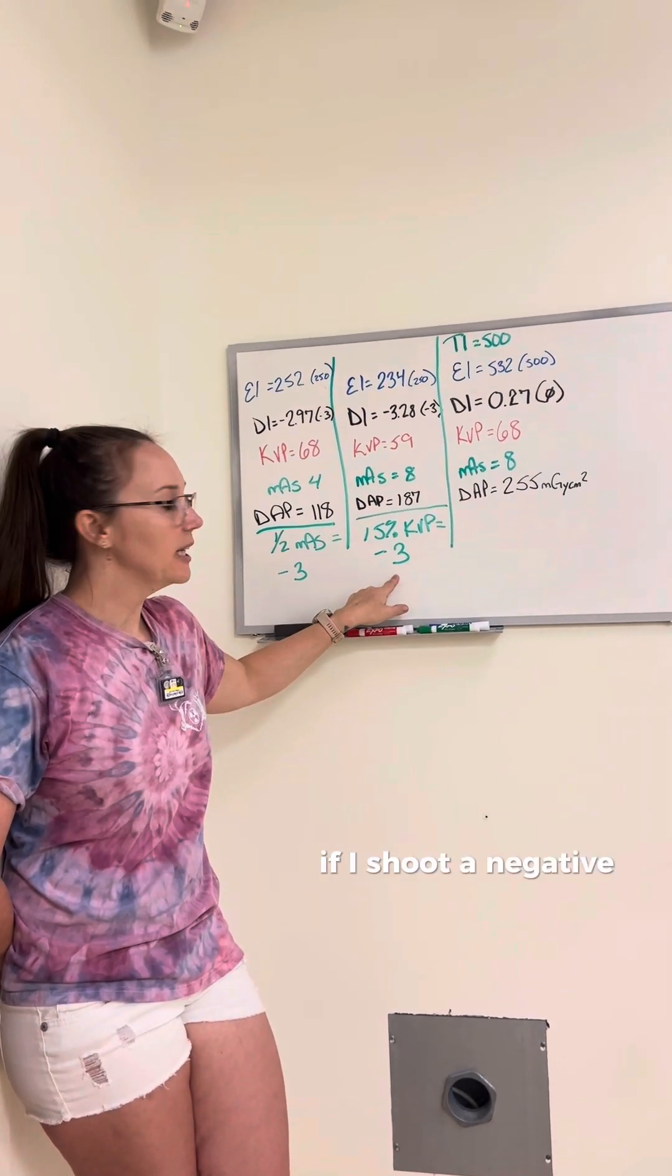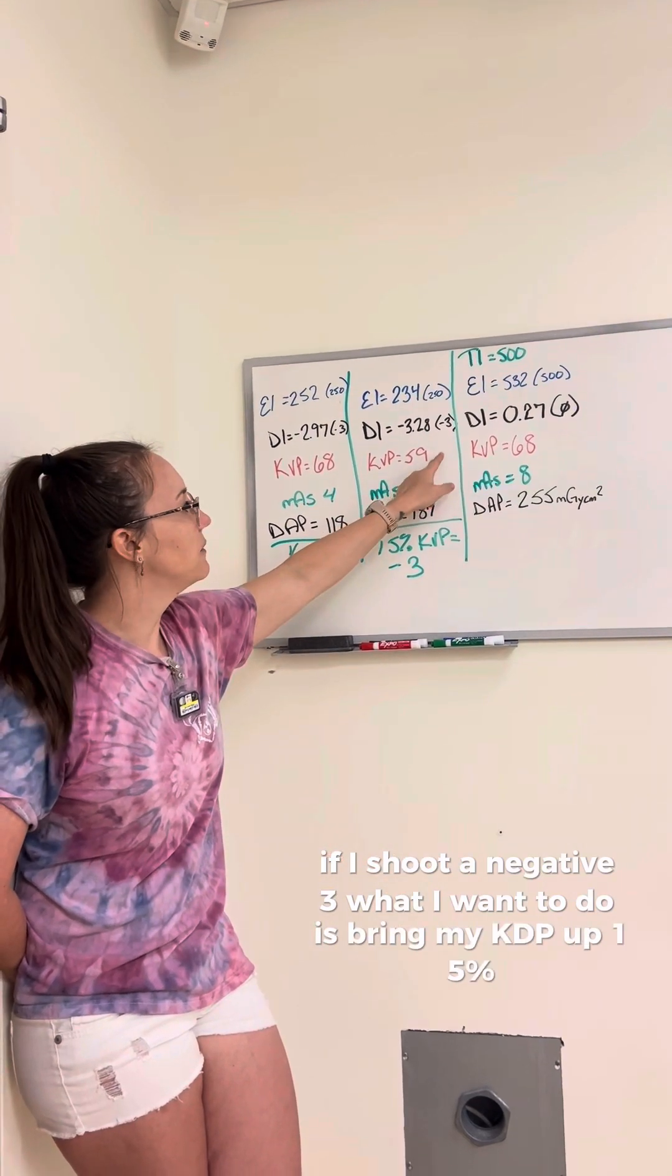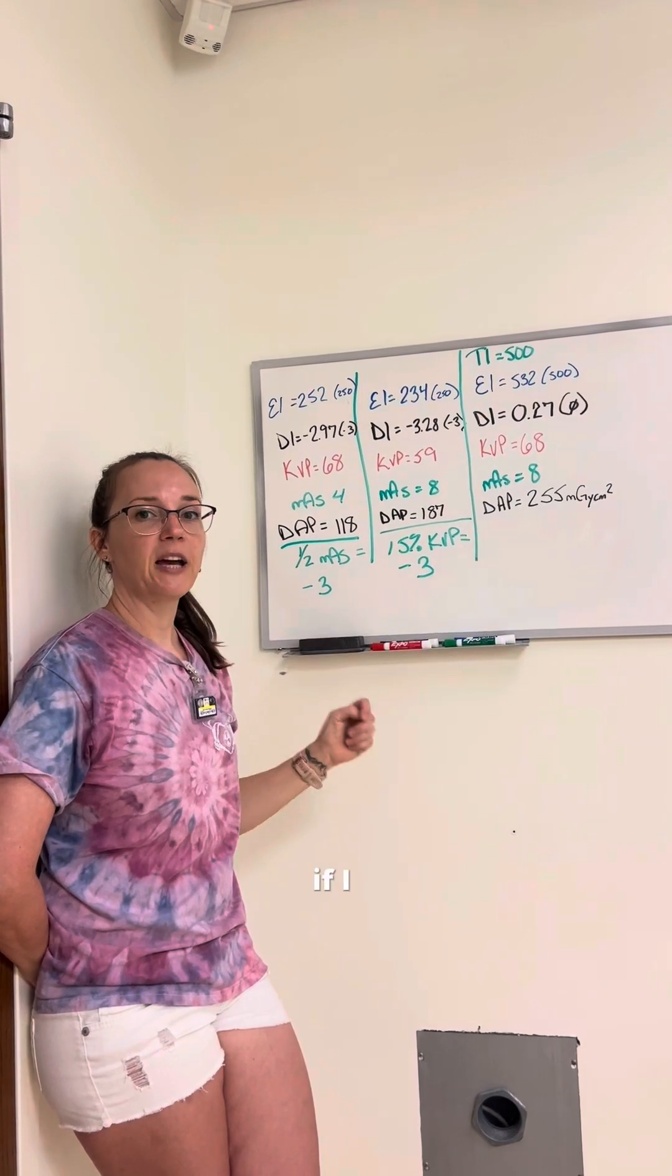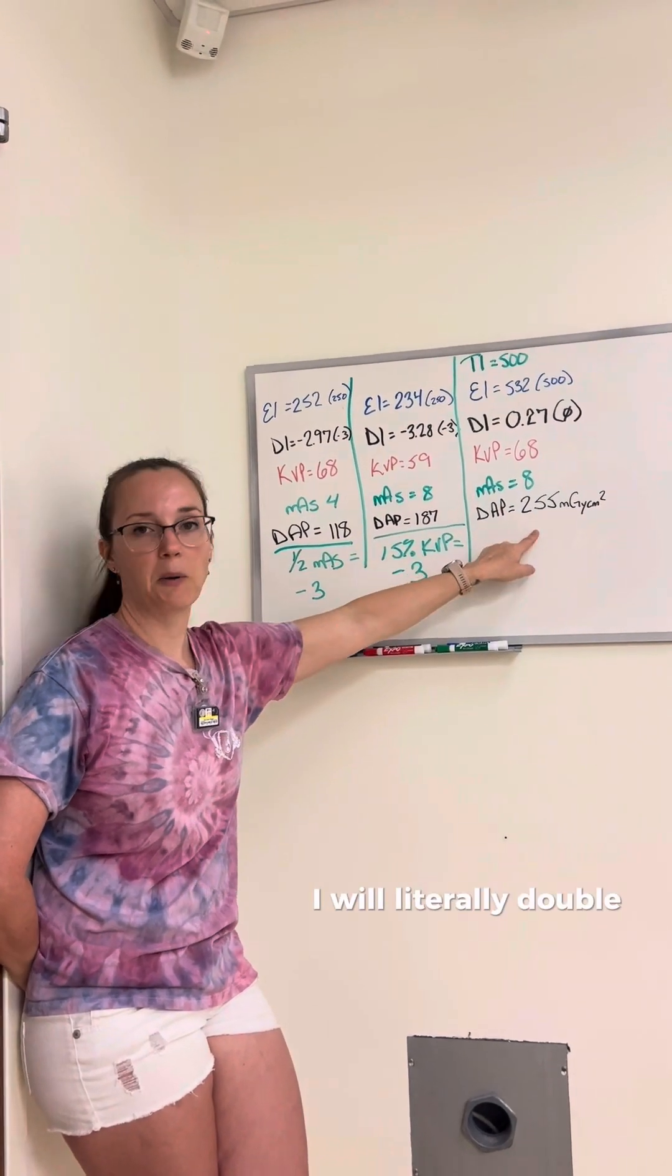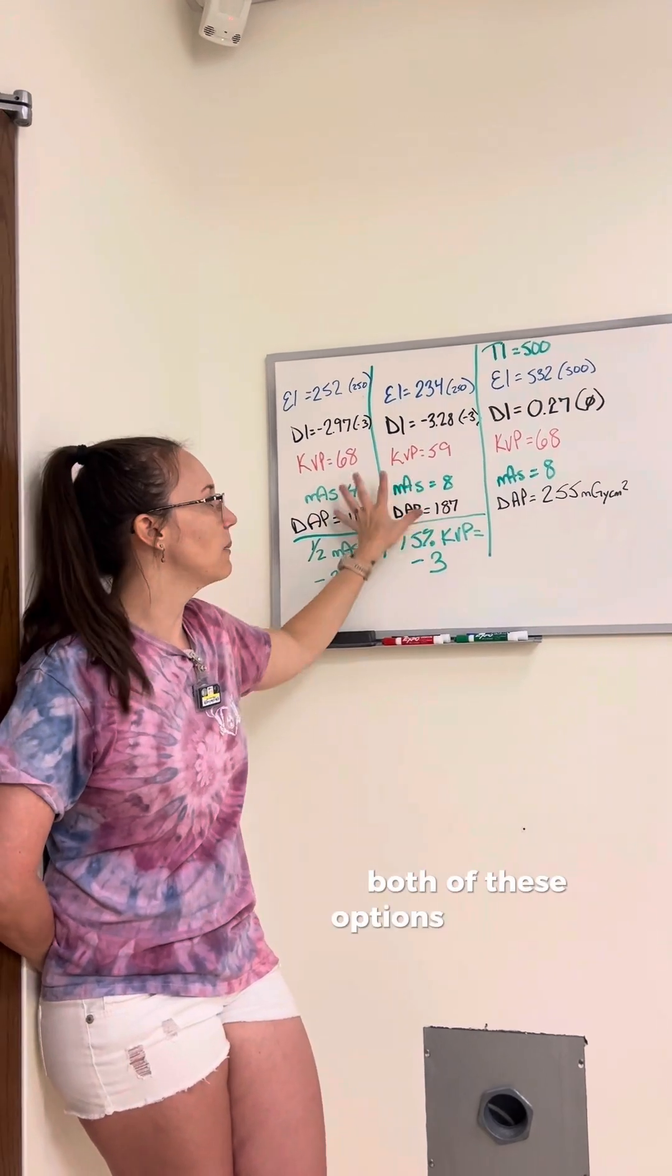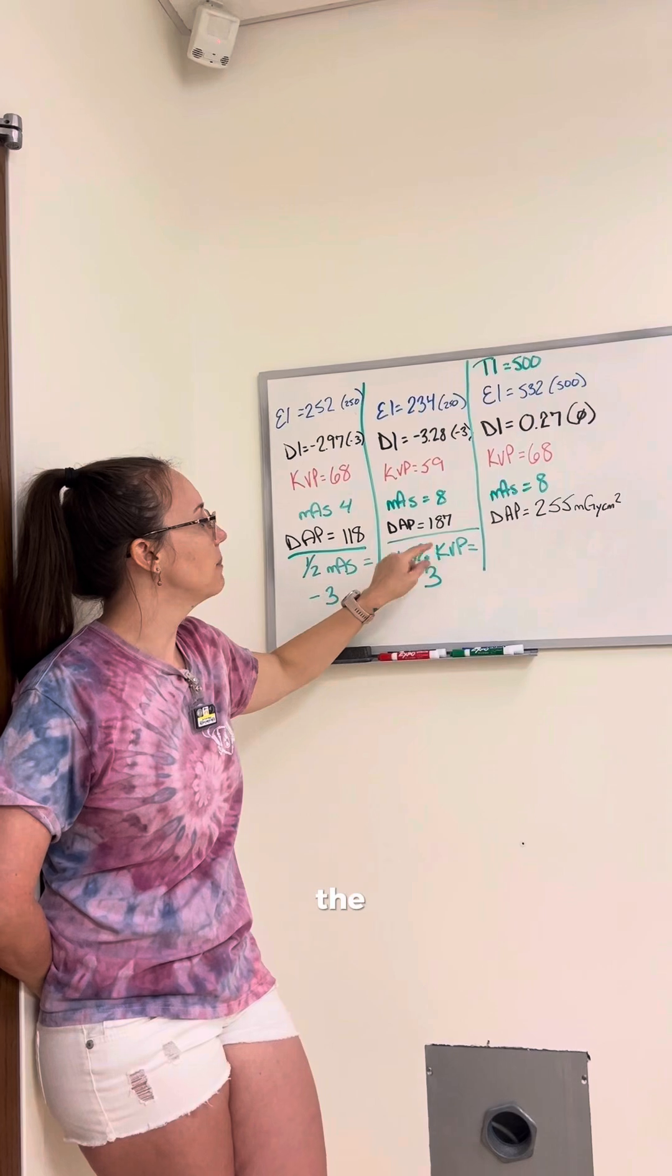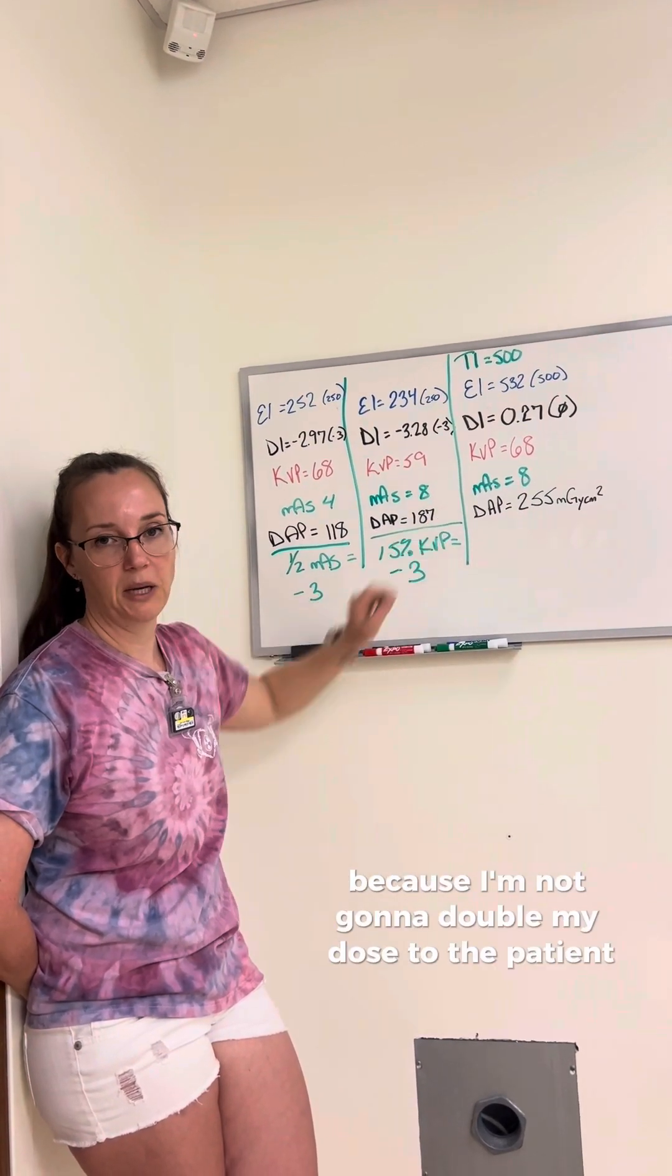If I shoot a negative 3, what I want to do is bring my KVP up 15% because do you see how it didn't double my dose? If I have a negative 3 and I double my mass, I will literally double my dose. Both of these options are going to get me to a 0. But if I have a negative 3, the best option is to bring KVP up 15% because I'm not going to double my dose to the patient.